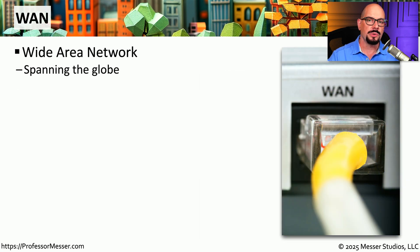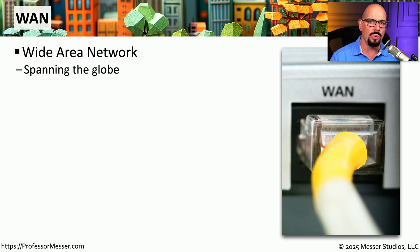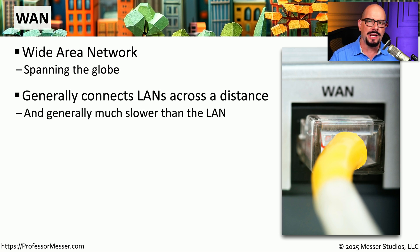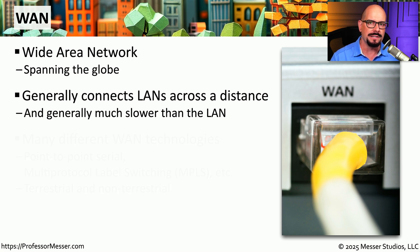If you're connecting to a location that's in another city, another state, another country, or anywhere around the world, then you're communicating over a wide area network or a WAN. Because of the challenges associated with communicating over such long distances, wide area networks tend to be a bit slower than communicating over a LAN.